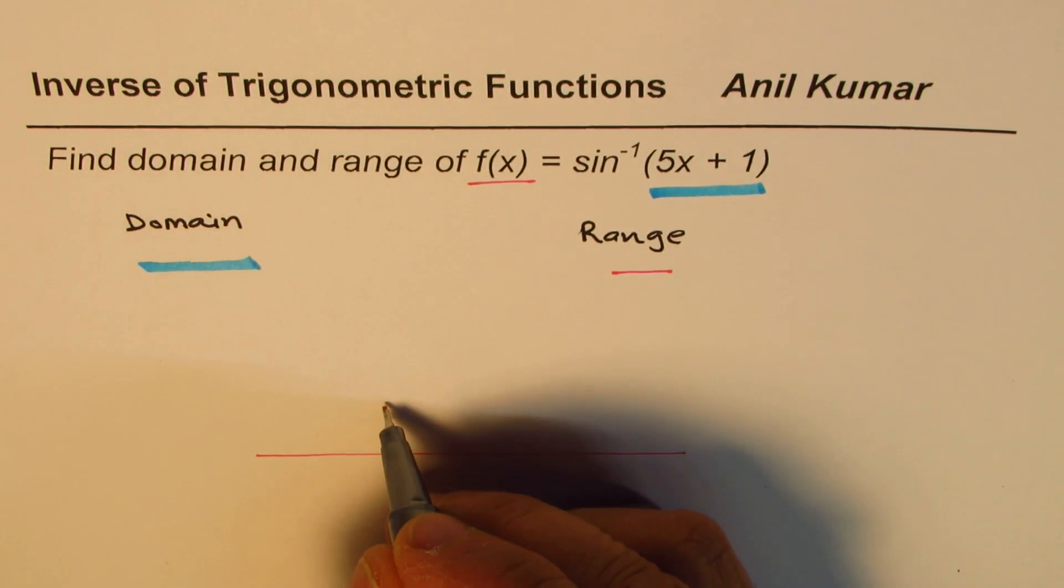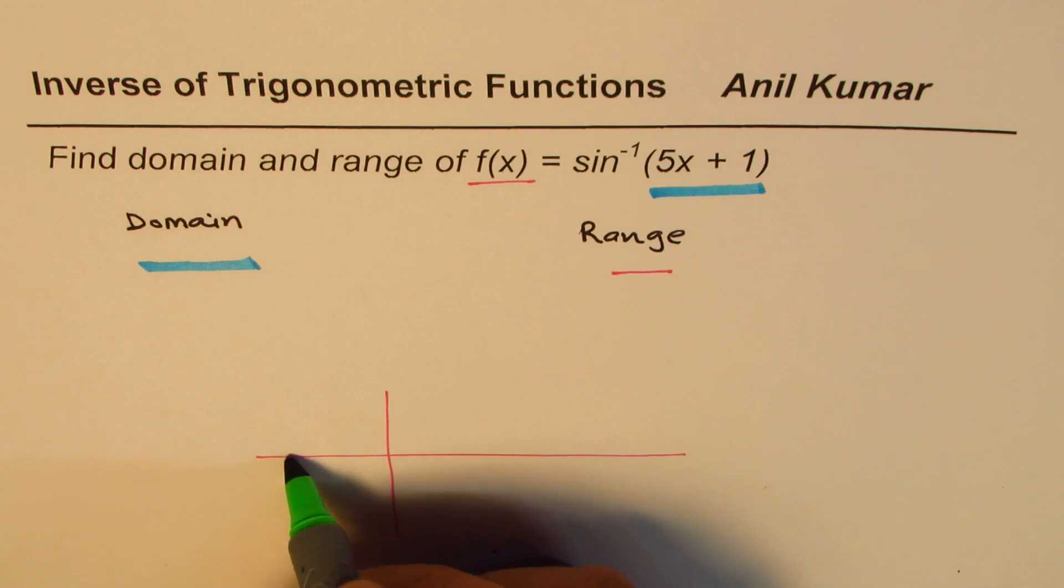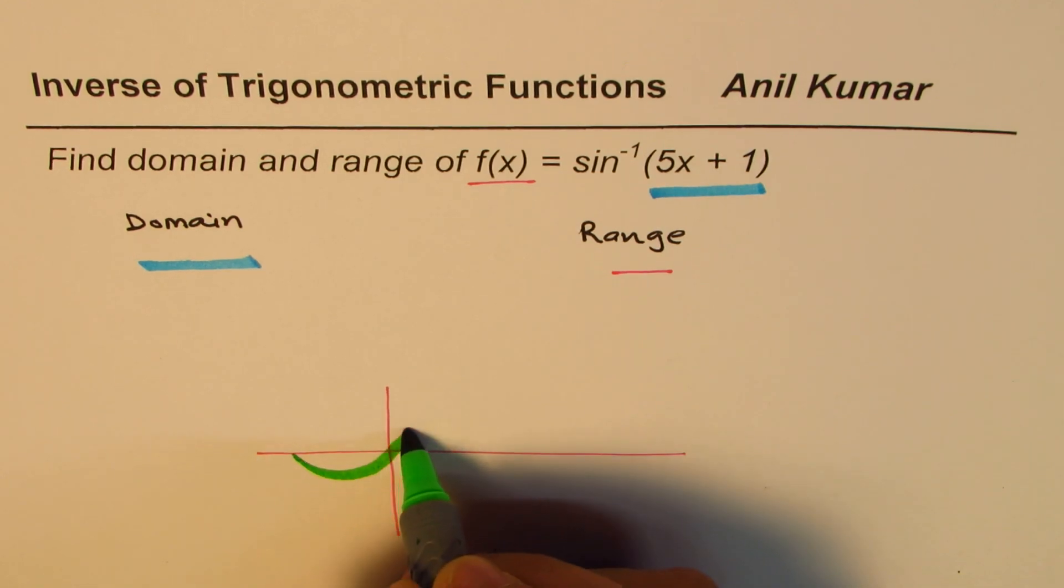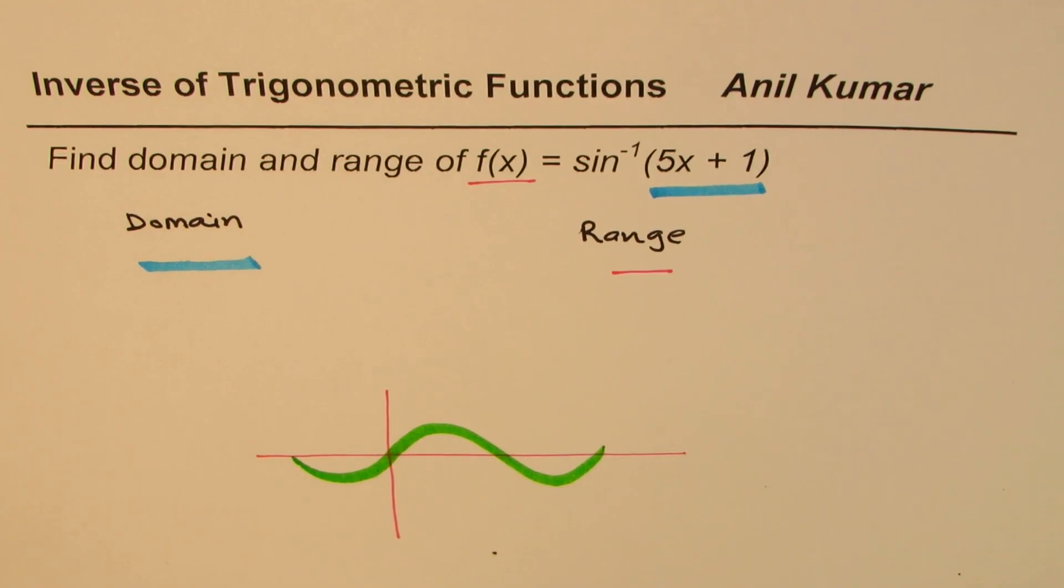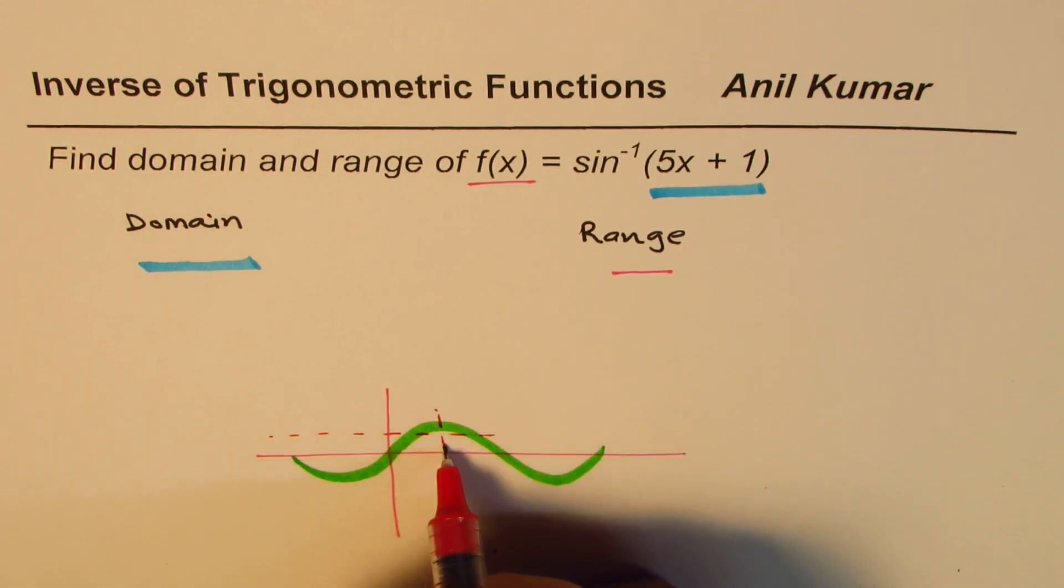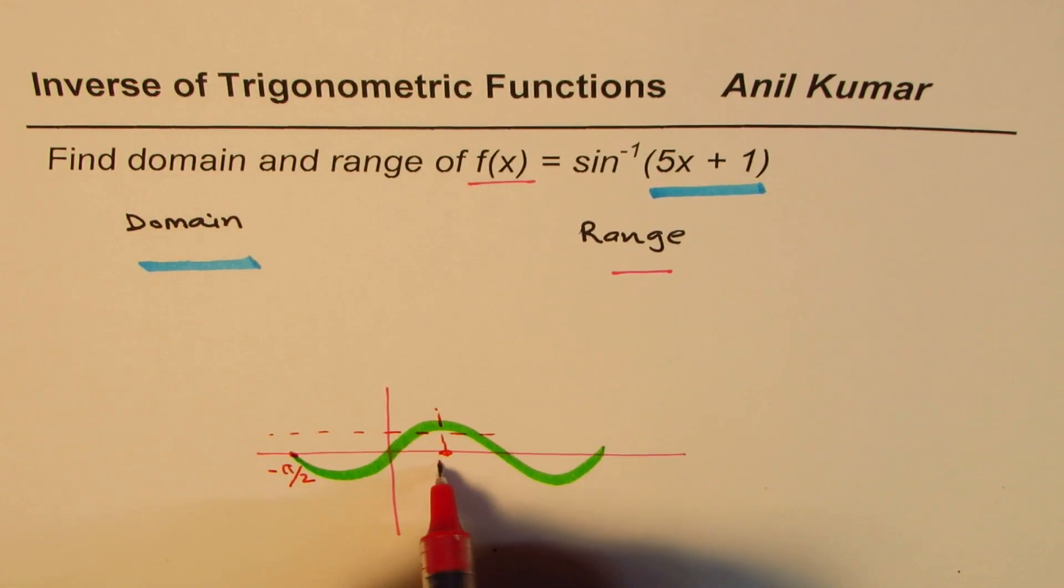So what we have here is a sine function, which is kind of like this. For inverse to be a function, it has to pass the horizontal line test, which it can do if we restrict the domain from minus pi by 2 to pi by 2.